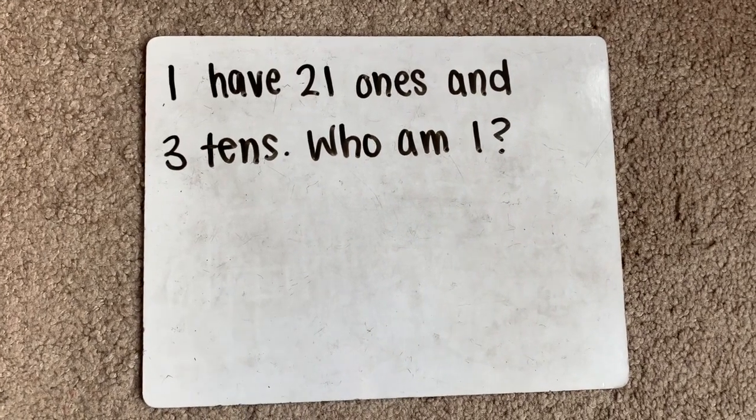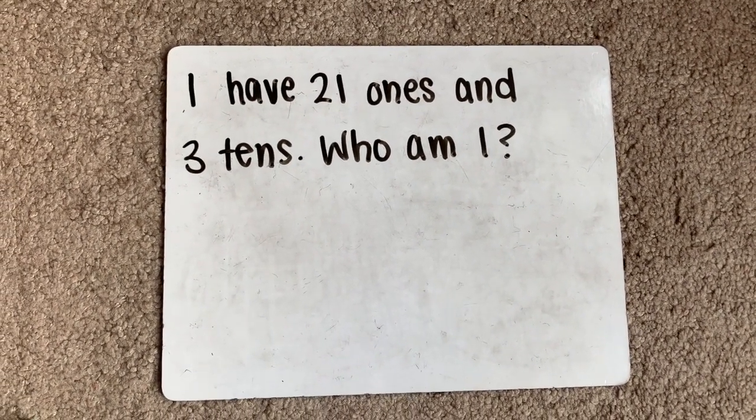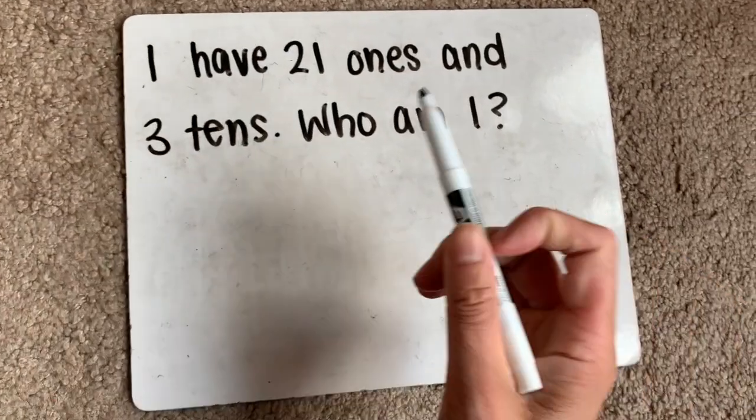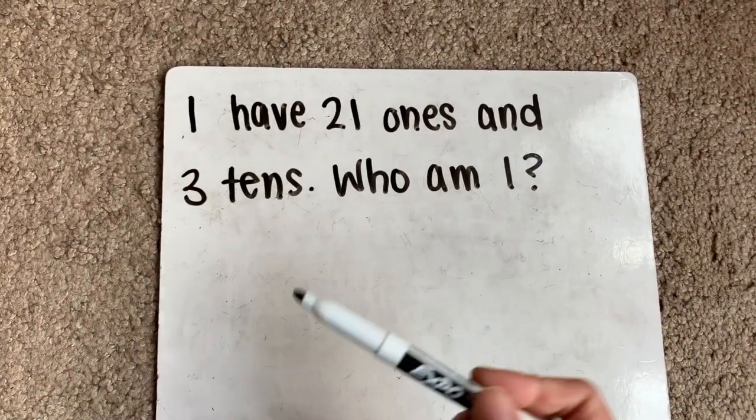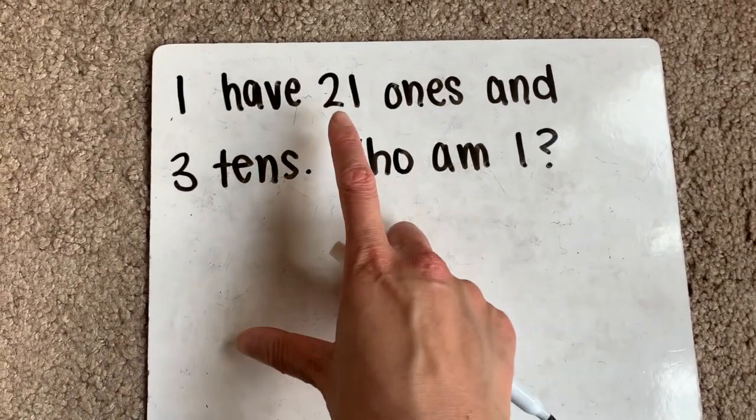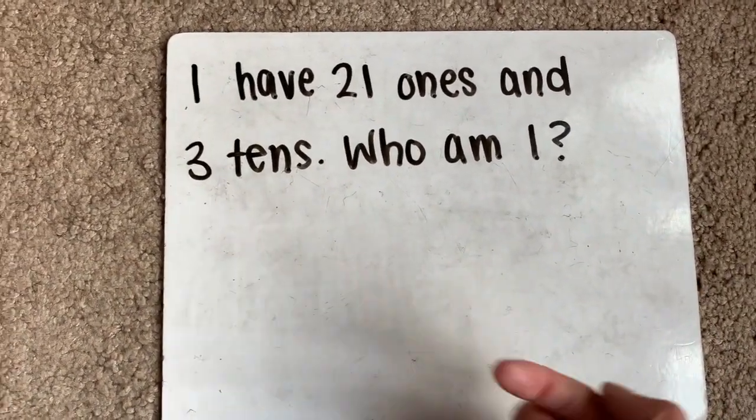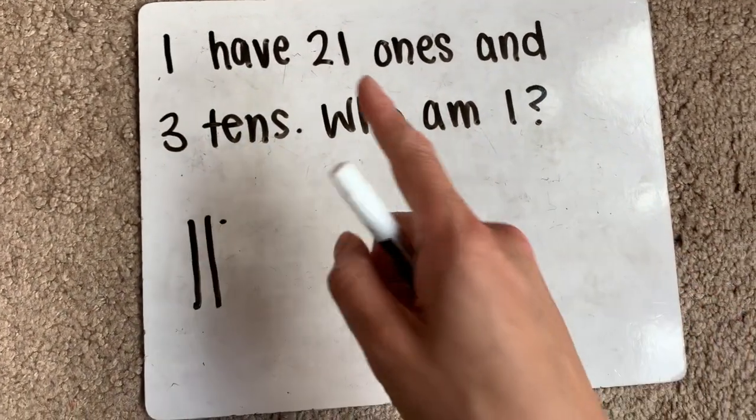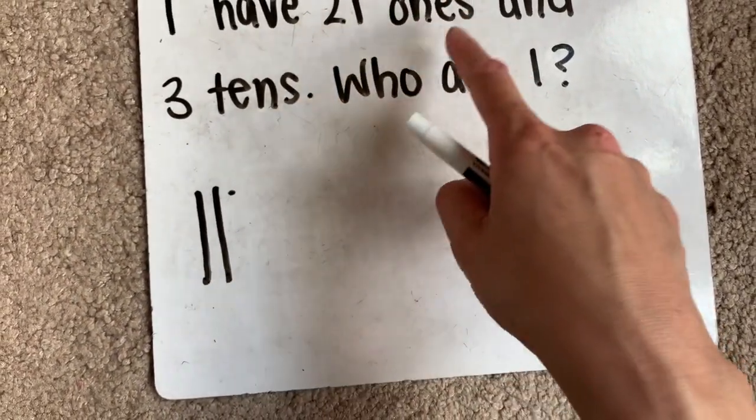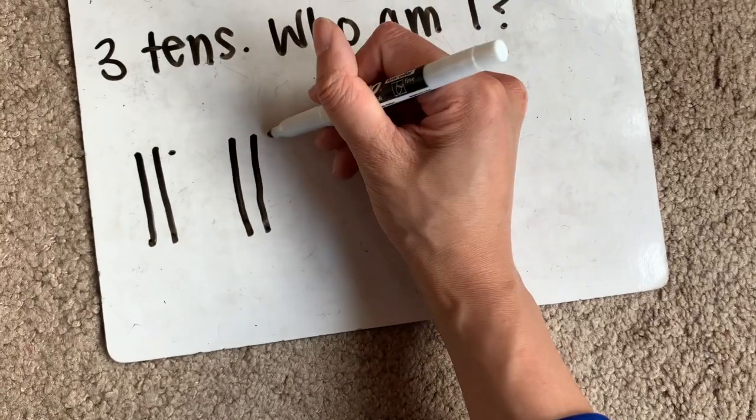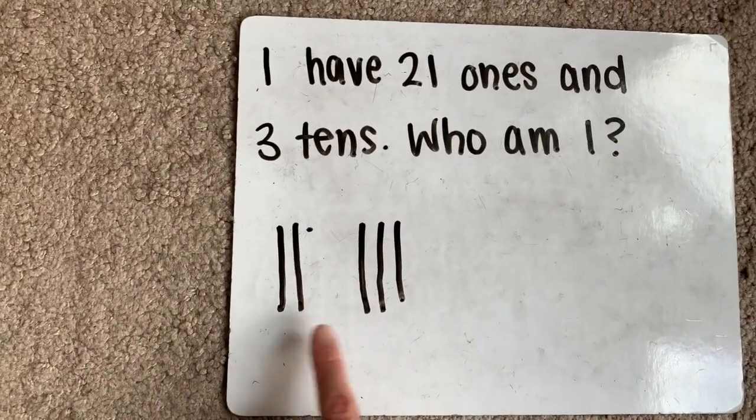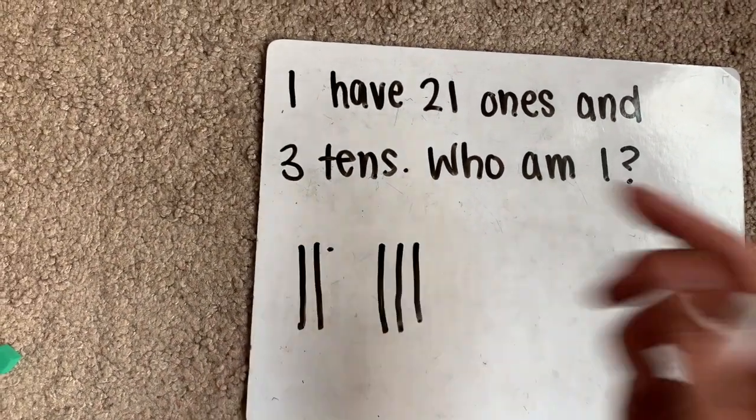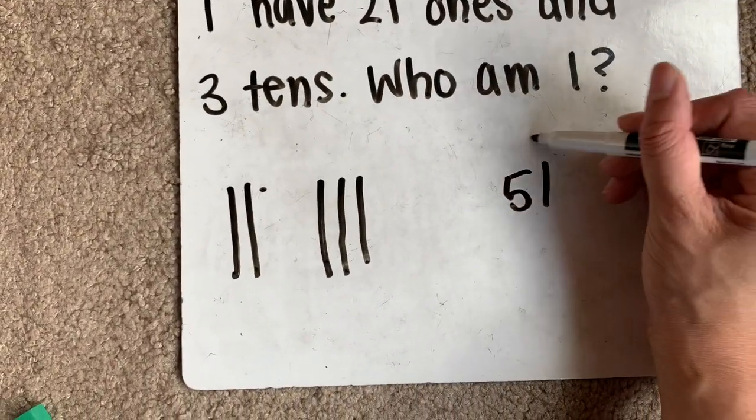Let's do one last one together before you do them on your own. This riddle is, I have 21 ones and 3 tens. Who am I? So I know that for 21, I don't have to draw out 21 dots or 21 cubes. I know that 21 is the same as 2 tens and 1 more. So I can draw 2 tens sticks and 1 more. So this number says it has 21 ones and 3 tens. So that means we need 3 more tens. 1, 2, 3 more tens sticks. I know that 2 plus 3 is the same as 5. So 5 tens sticks and 1 more is the same as 51.